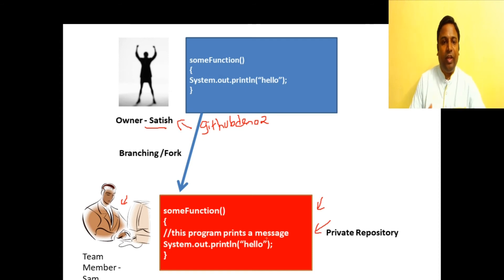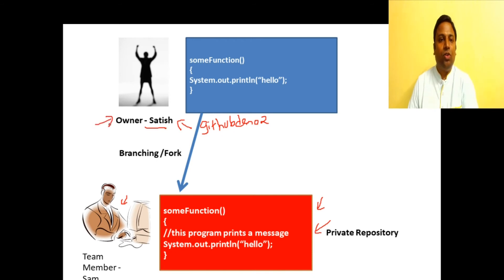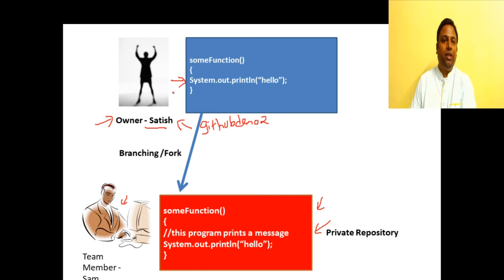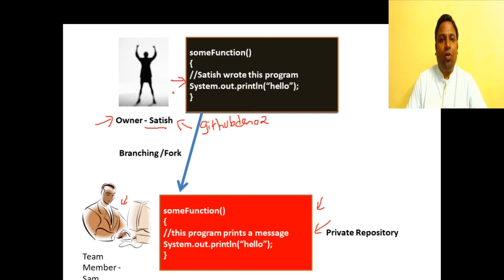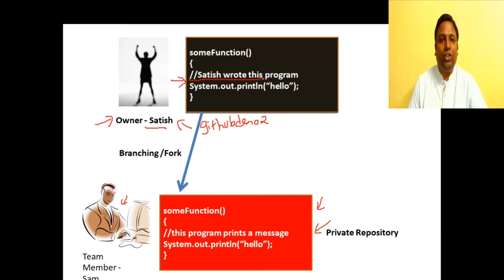In his private copy, Sam makes his change: adding the comment line 'this program prints a message.' Meanwhile, our owner Satish also gets excited and wants to make some changes to his code. He goes and adds a comment line to the main repository: 'Satish wrote this program.' So now two users are parallelly working on the same code.